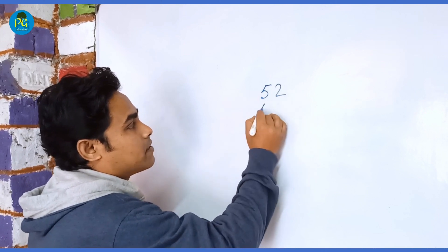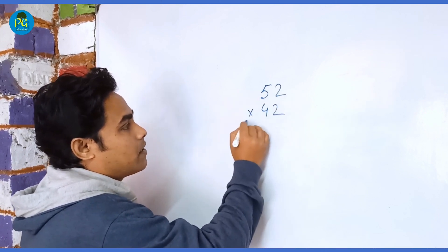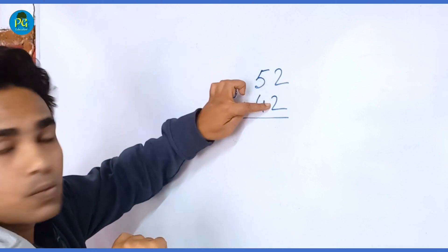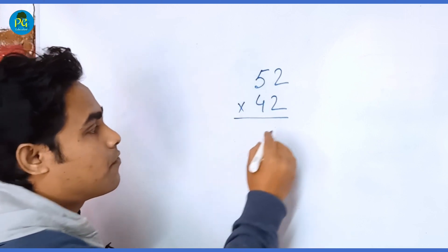First we have to do 2 into 2. So 2 into 2, it is 4.